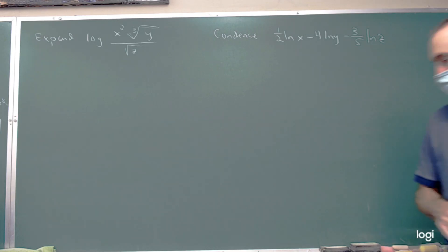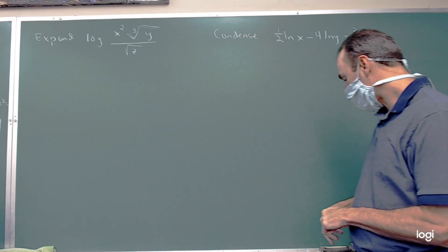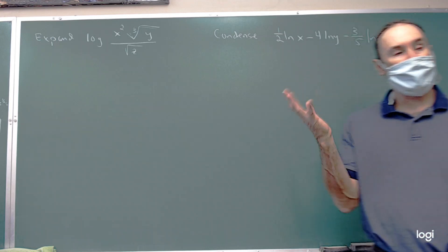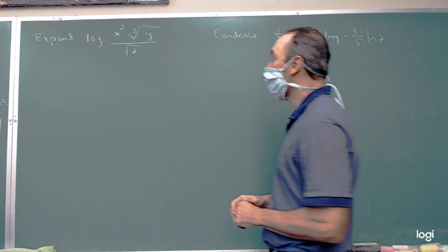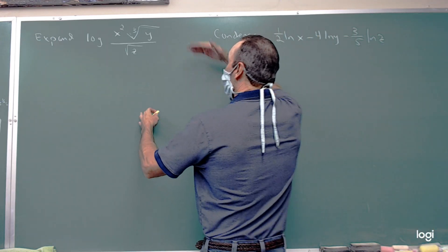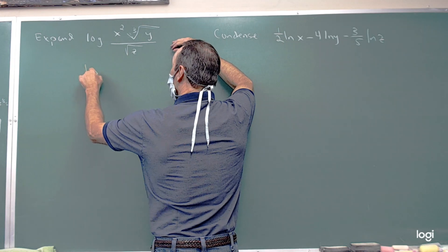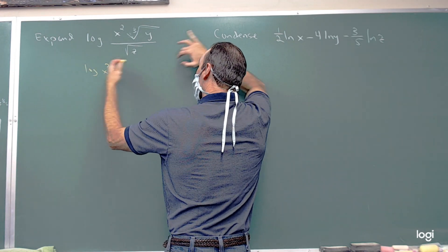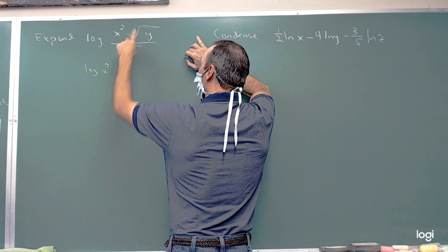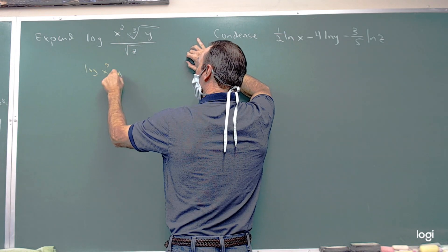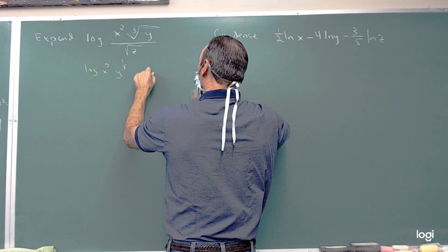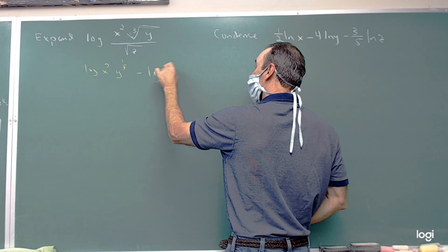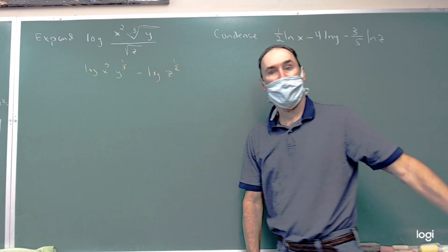We're doing a couple of practice problems here. The first one, we're expanding. Using our properties of logarithms, the logarithm of a division is going to be the subtraction — the difference in the logarithms — and I'm going to rewrite this as to the one-third power and write the square root as to the one-half power.